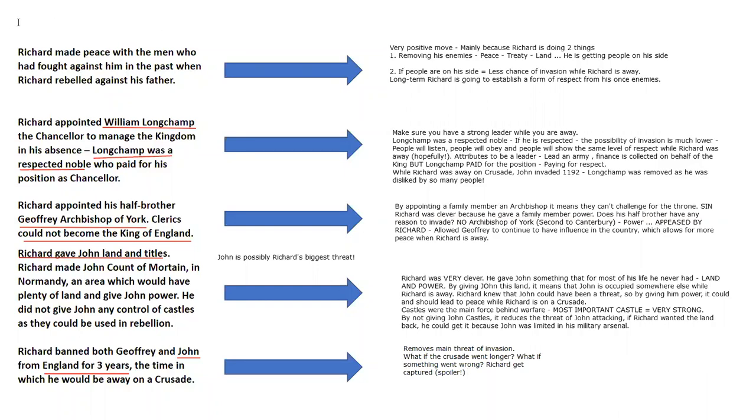Now if we're going to put this in GCSE terms, what you've got here is your evidence and what you've got here is your explanation. That shows you've got your evidence. You know, one reason why Richard was able to secure the throne was that he made peace with the men who fought against him in the past. Brilliant evidence. This helped him secure the throne because he's removing his enemies, which would lead to peace. By giving them land, he's getting people on his side. And if people are on Richard's side, there's less chance of invasion while he's away. And in the long term, Richard's going to establish a form of respect. It shows you the importance of evidence and explanation.